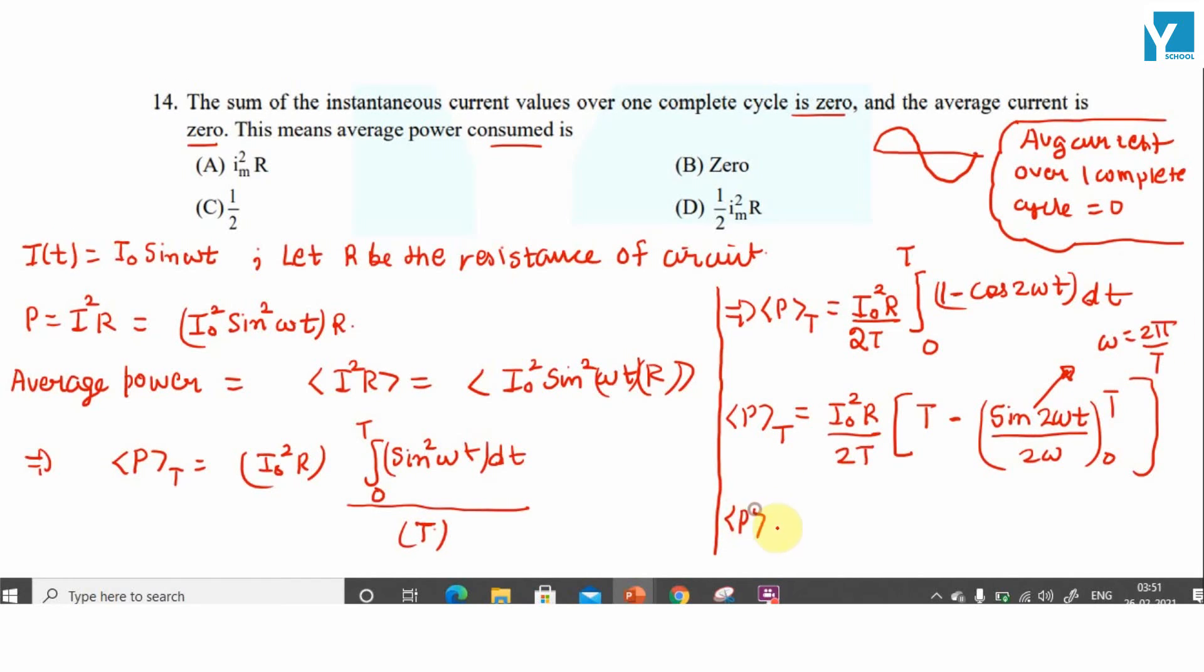Average power over one complete time period will come out to be I₀²R divided by 2T times T. The T gets cancelled, so average power over one complete time period is I₀²R/2.